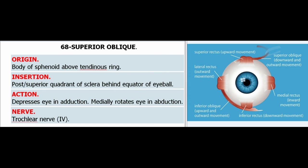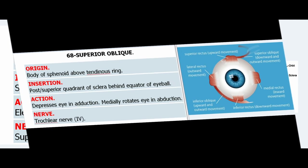68. Superior Oblique. Origin: Body of sphenoid above tendinous ring. Insertion: Posterior superior quadrant of sclera behind equator of eyeball. Action: Depresses eye in adduction, medially rotates eye in abduction. Nerve: Trochlear nerve (IV).